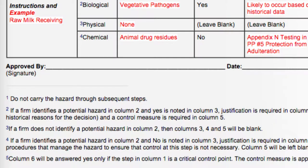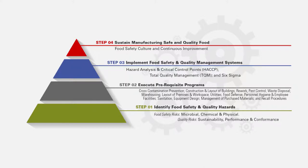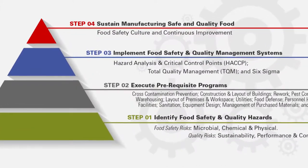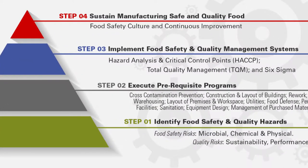Moving on to the question of whether the hazards are reasonably likely to occur — one of the common mistakes I see is folks not assuming that they have effective prerequisite programs. Effective prerequisite programs make many of the hazards not reasonably likely to occur, and this emphasizes the concept of the food safety pyramid. A food safety management system such as HACCP won't be effective unless you have good prerequisite programs, so count on many of your prerequisite programs for controlling many of the food safety hazards that could appear.